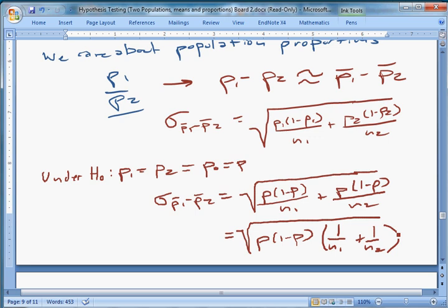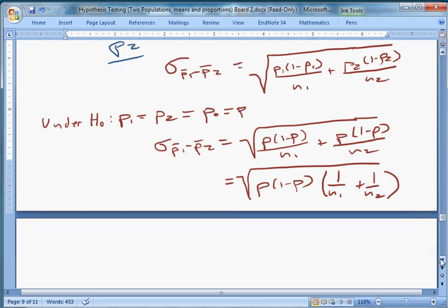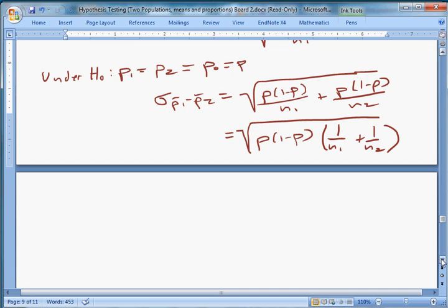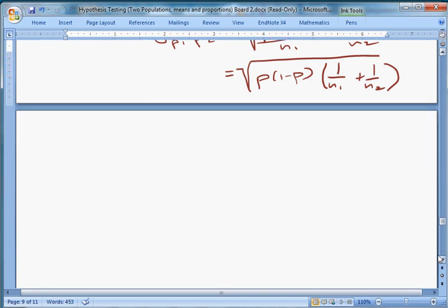And in practice, generally, usually we're testing whether there's a difference or not. And that's what this is really. This null gives us that test. Is there a difference or is there no difference? And in particular, is one bigger than the other, or is one smaller than the other?